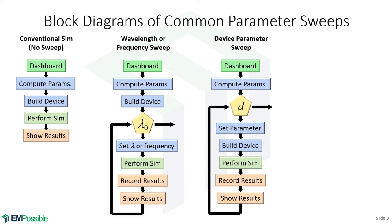Another type of sweep is changing some parameter about the device — for example, the height of a grating tooth — and looking at reflection and transmission as a function of that. We still have our dashboard and may compute intermediate parameters before the main loop. Inside the main loop we're looping over the parameter we want to vary. The first thing we do is determine the current parameter value. Now we build the device inside the loop, because the device is different at each iteration. Then we perform the simulation, record results, and show results. When done, we plot and learn.